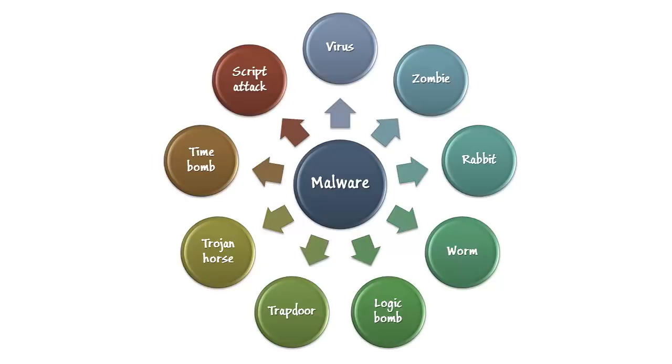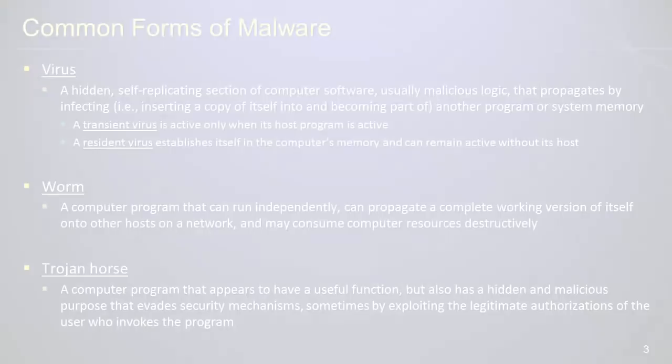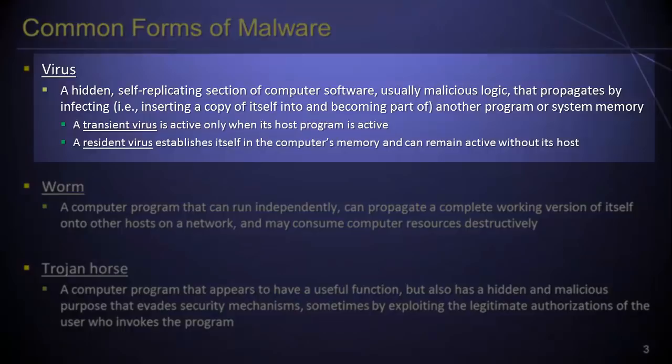Perhaps one of the most well-known types of malware is a virus. In the context of information security, a virus is a hidden, self-replicating computer program that propagates itself by infecting other programs or system memory. Viruses can be broadly classified into two groups: transient viruses, which are active only when their host programs are executing, and resident viruses, which establish themselves in system memory and can remain active even after their host programs have been terminated.